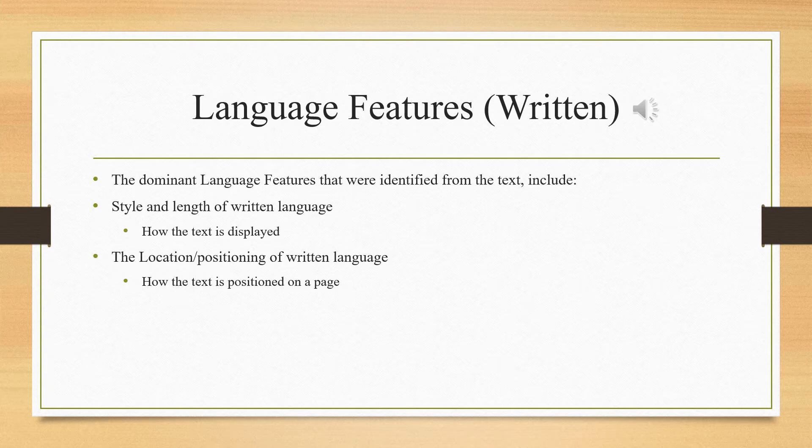Within the story, the style and length of the written language is primarily depicted as short, succinct and simple sentences or phrases. This has been done to provide an impactful yet general idea, which is further expanded upon by the imagery. The focus is on the imagery, and as such, the text works to reinforce the imagery by providing context. This leads to the importance of the location and positioning of the written language — the story focuses primarily on visual storytelling, so the written language has been positioned to blend into the imagery and promote visual storytelling.